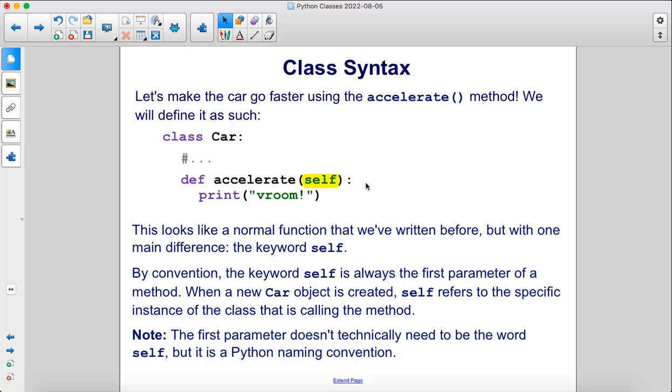By convention, the keyword self is always the first parameter of a method. When a new car object is created, self refers to the specific instance of the class that is calling the method. Note, the first parameter doesn't technically need to be the word self, but it is a Python naming convention.